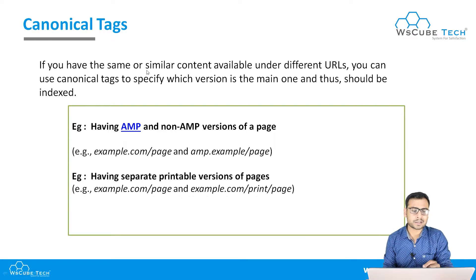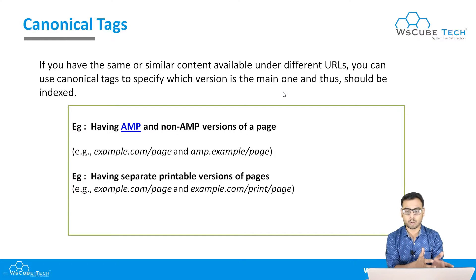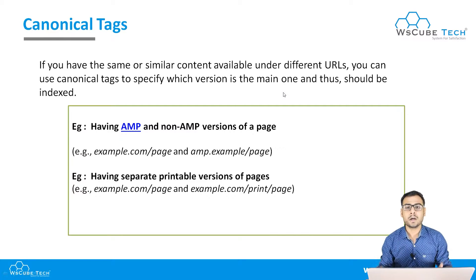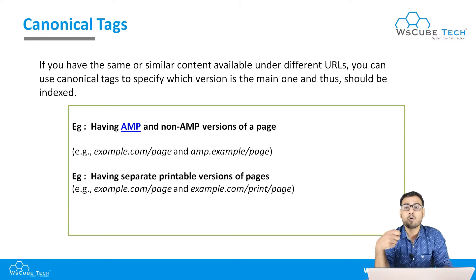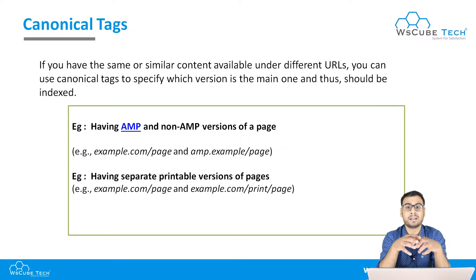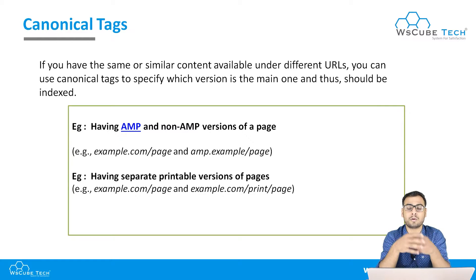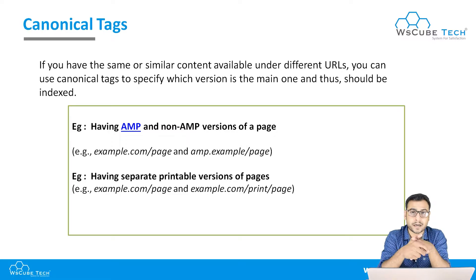You can use canonical tags to specify which version is the main one and which should be indexed. The problem is that you do not want both pages to be indexed on the same keyword, as that creates a lot of confusion for the crawler trying to understand what kind of content is on your website.